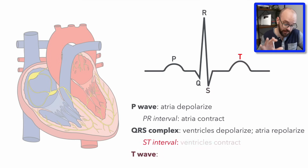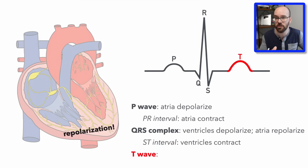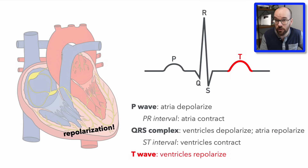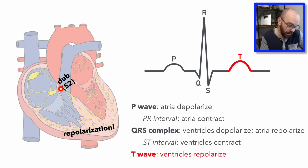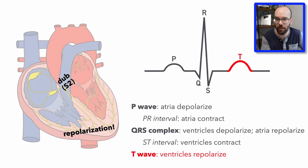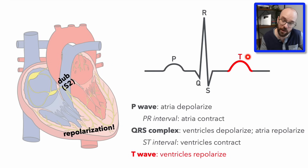The T wave represents repolarization of the ventricles — the turning off of ventricular contraction. After the ventricles finish contracting, we have the second heart sound, the 'dub' of lub-dub. Like the first heart sound, it's caused by valves snapping shut — the pulmonary valve and the aortic valve — preventing blood from flowing back into the ventricles through the aorta or pulmonary artery. The second heart sound occurs around the end of the T wave.